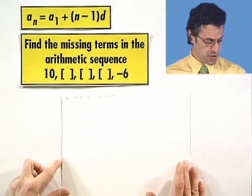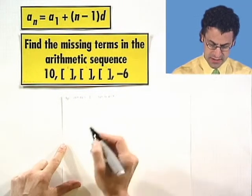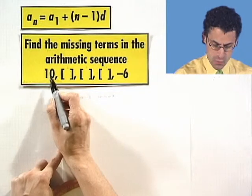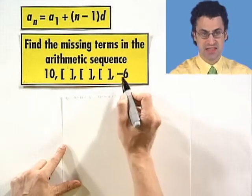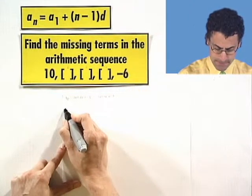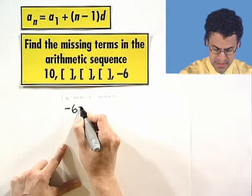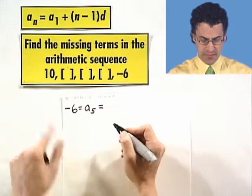Let's try. So if I try to write down the formula, what I see here is that this is a₁, a₂, a₃, a₄, a₅. So negative 6 is the fifth term. That means that negative 6 equals a₅. But what does a₅ equal?